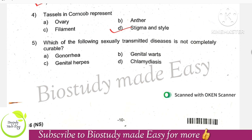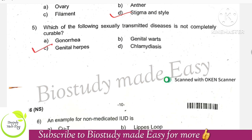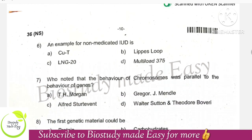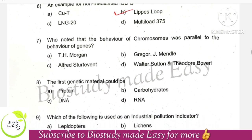Which of the following sexually transmitted diseases is not completely curable? The right option is option C, genital herpes. An example of a non-medicated IUD — the right option is Lipis loop.